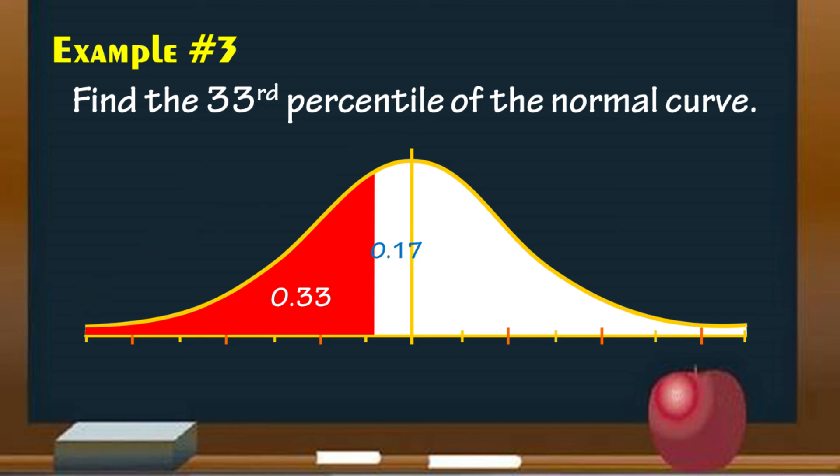Now, locate 0.17 or 0.1700 from the Z table. Take note, the areas under the normal curve always start from 0. That is why we took 0.17, not 0.33.